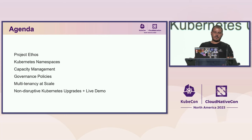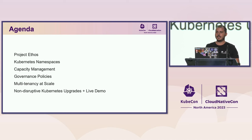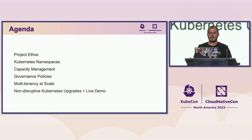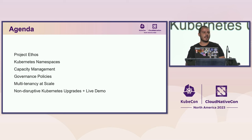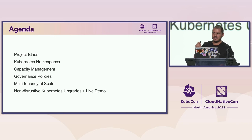In the first part of the presentation, I'm going to talk about project Ethos, Kubernetes namespaces, and capacity management. And Adrian will continue with governance policies, multi-tenancy at scale, and non-disruptive Kubernetes upgrades plus a live demo. So stay tuned.